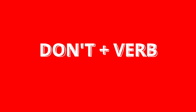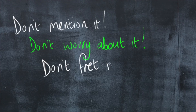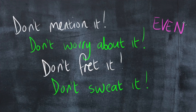Let's move on to the third grouping in this category. These are the phrases that start with 'don't': 'don't mention it,' 'don't worry about it,' 'don't fret it,' 'don't sweat it.' And then for emphasis you can use the word 'even': 'don't even mention it,' 'don't even worry about it.'